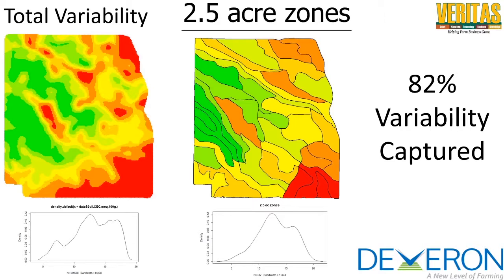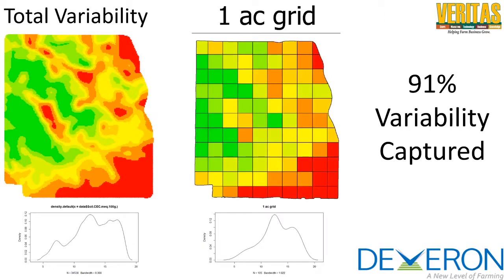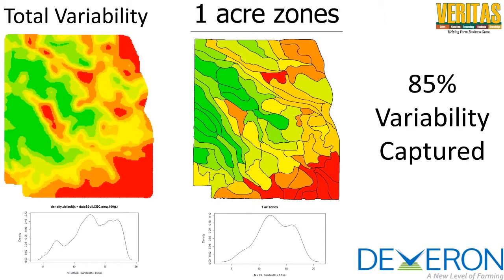If you really want to go intensive, you can go to the 1-acre grid — that's going to capture 91% in a grid, and in zones maybe 85% depending on how the zones are made. If you want this level of variability captured, it's time to start investing in soil scanning technology, whether it be Soil Optics, Swatbox, Verus, SIS from Trimble, or any other system. That's going to be a little bit more expensive, but you can take advantage of that for your farm.